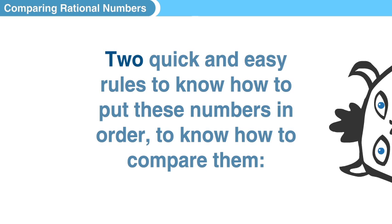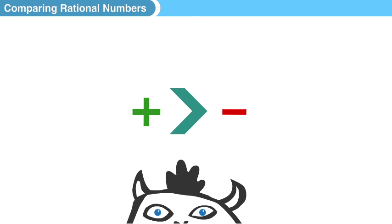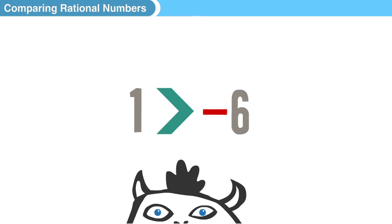So here we have one is greater than negative six. Okay, all positive numbers are greater than all negative numbers. That's rule number one. One is greater than negative six.